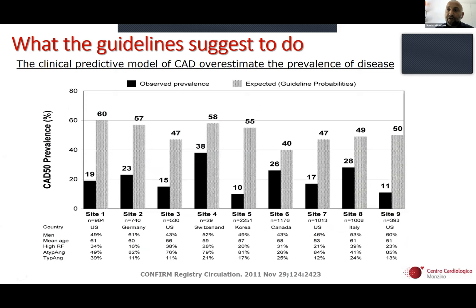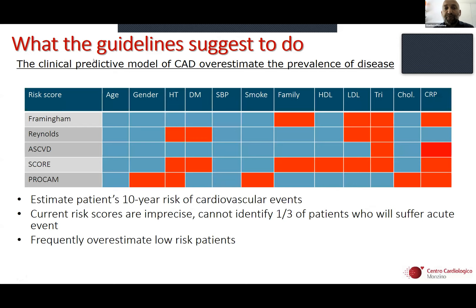The first problem with the previous guidelines: we use clinical risk scores to estimate the prevalence of coronary artery disease in a patient. But in the CONFIRM registry experience that we published, joined with Jim Min from Cornell University, we showed that the prevalence of observed disease with cardiac CT is absolutely different, with a trend to overestimate the prevalence of coronary artery disease when using clinical risk scores. This happens regardless of which clinical risk score you are using.